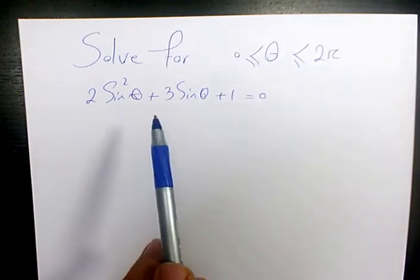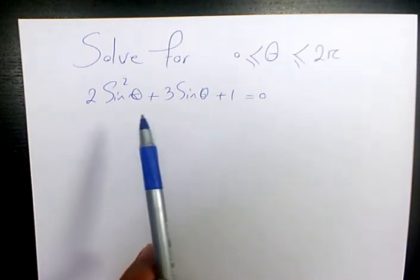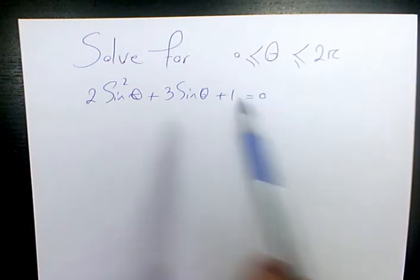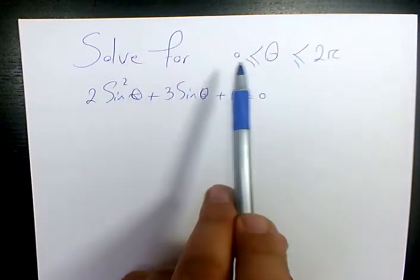In this video I want to show you how to solve this trigonometric equation, which is 2 sine squared theta plus 3 sine theta plus 1 equals 0, and we need to solve it for theta between 0 and 2π.